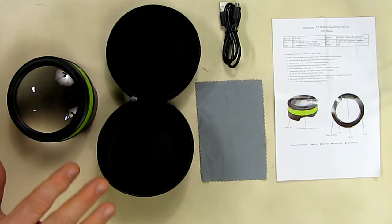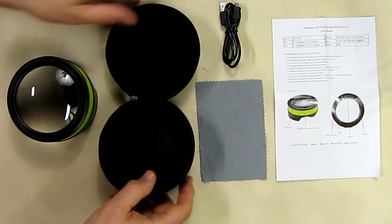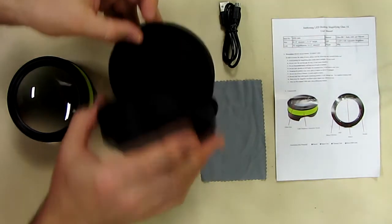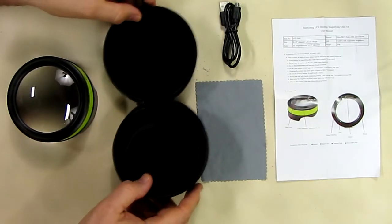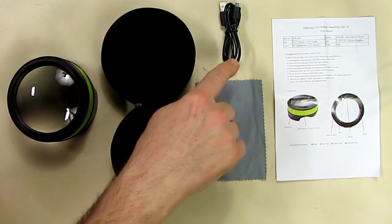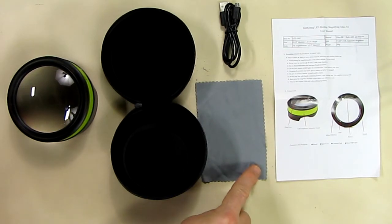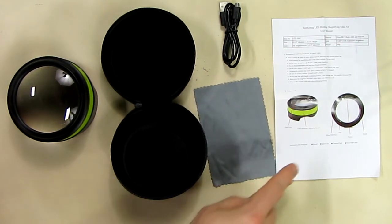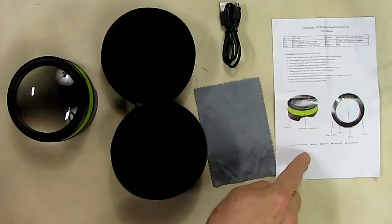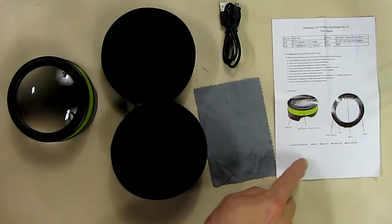This is what the product comes with. It comes with a very nice zipper protector holder, the unit itself, a charging USB cable, a lint-free wiping dust cloth, and a two-sided instruction manual.